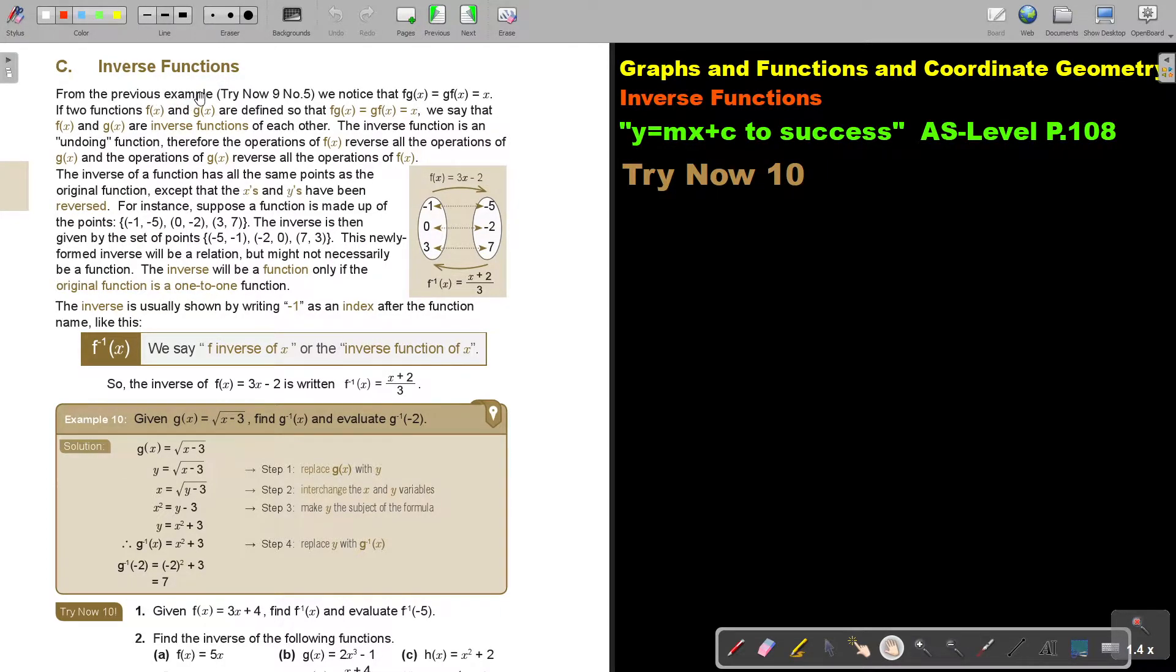From the previous example, try now 9, number 5, we notice that F of G of X is equal to G of F of X is equal to X. If two functions F(X) and G(X) are defined so that F of G of X equals G of F of X equals X, we say that F of X and G of X are inverse functions of each other. The inverse function is an undoing function. Therefore, the operations of F(X) reverse all the operations of G(X) and the operations of G of X reverse all the operations of F.